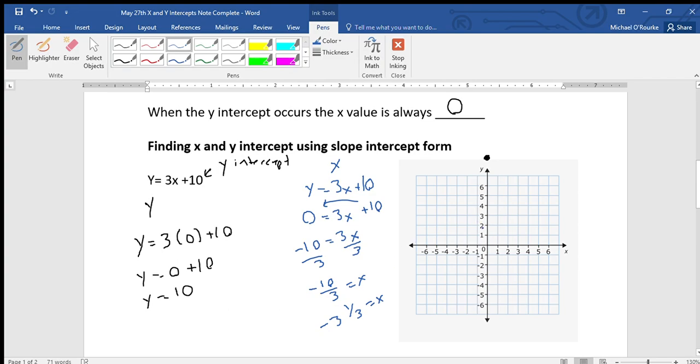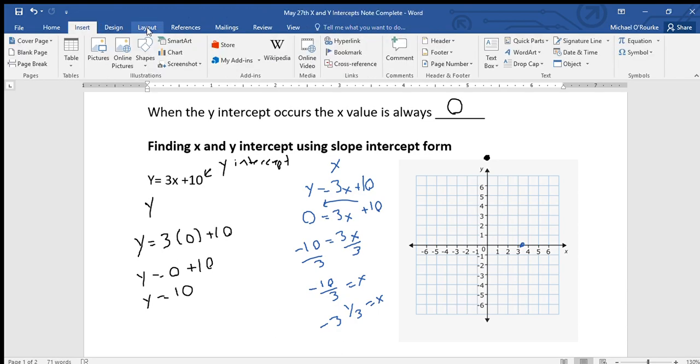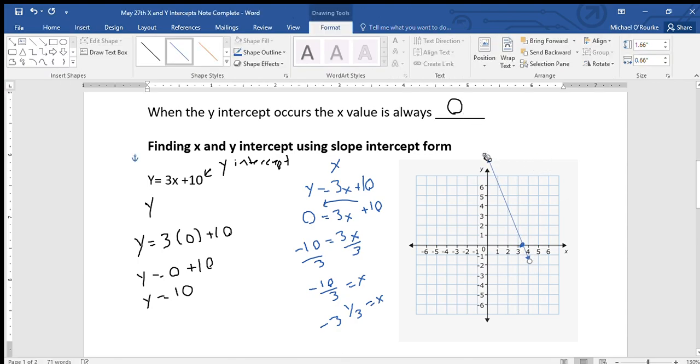So let's estimate it. We go along our x-axis about there, and then we insert a line. Where's my shapes? Where's my double-ended line? There we go. And there's our graph that we made.